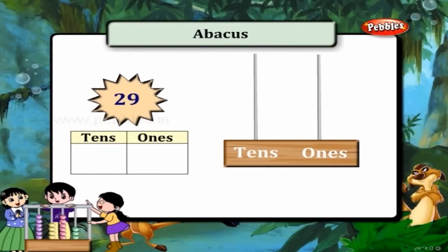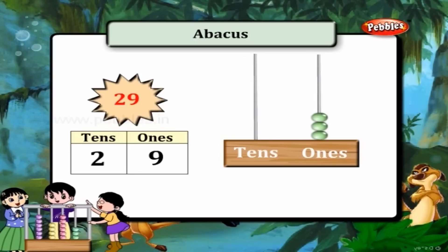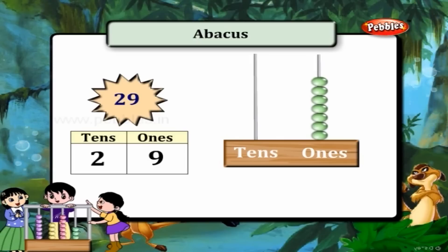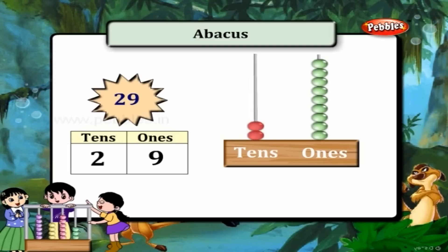29 is 9 ones and 2 tens. So draw 9 beads on the ones line and 2 beads on the tens line.